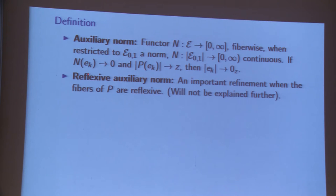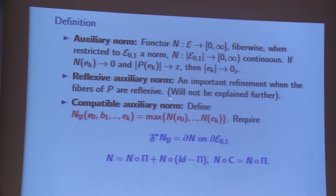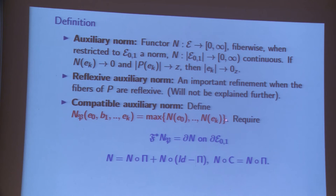You can always construct this if the fiber in your bundle category is reflexive — like Hilbert space in our case. If you have an auxiliary norm, you can define it on a fiber product by taking the maximum of individual factors. It's important to take the maximum and not the sum — that is what you can control. If the maximum is controlled, you can control compactness of the product on the boundary. Then the Fredholm property allows you to disperse that control to a neighborhood.